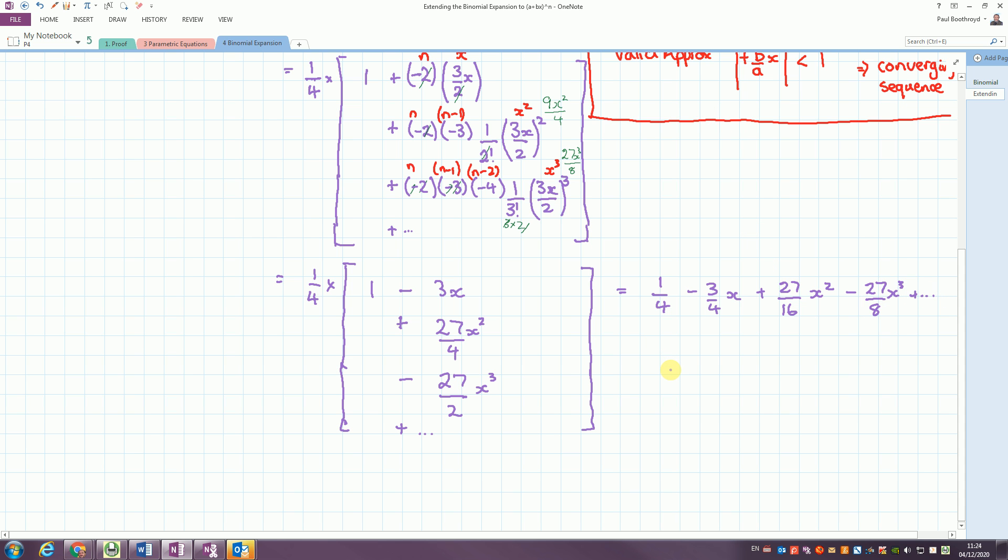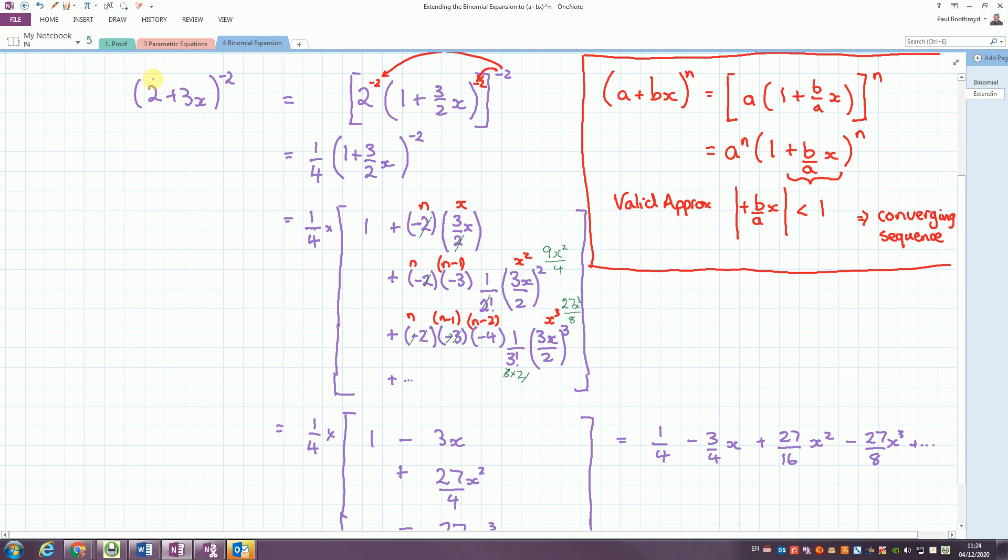And if we remember the rule above, we also need to say, from my expression, what is the valid region for expansion. So it's valid if the b over a x modulus is less than 1. And in this case, we've got b is 3, a is 2. 3 halves x is less than 1. So x is valid up to 2 thirds. Not including.